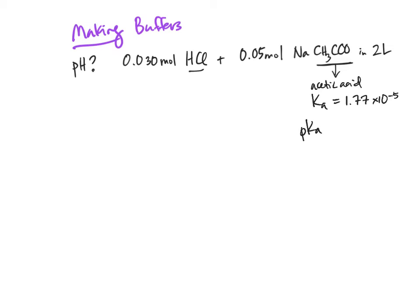To figure out the pKa value, we would take the negative log, base 10, of Ka, and the negative log of 1.77 times 10 to the minus 5th is 4.76.